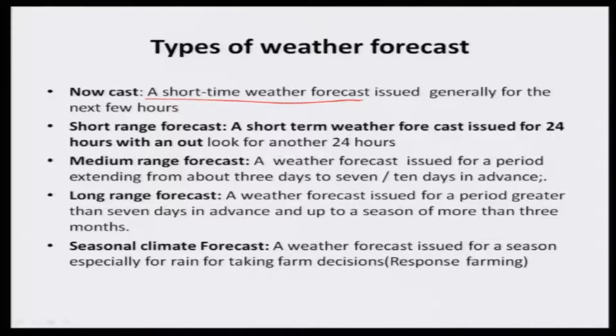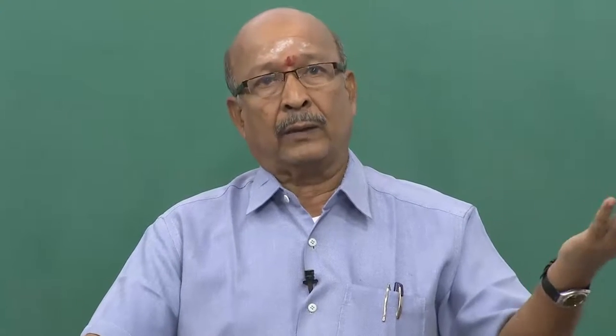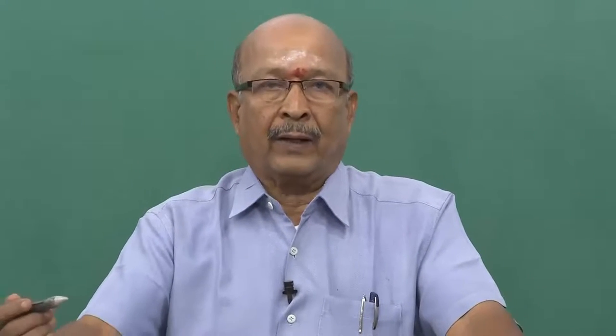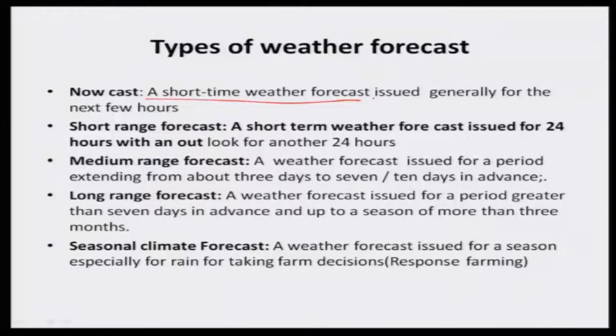After studying the meteorological scale and methodology, what are the types of forecasts that exist in the world, especially in India? One is nowcast. The word itself says 'now' — an instant, very short-time weather forecast. For next hours, what will happen? For example, hailstorm cannot be predicted one or two days in advance — it is very difficult. It can be predicted an hour in advance. For predicting the hailstorm, nowcast is very useful. Nowcast is very important for public safety, but not very important to agriculture.